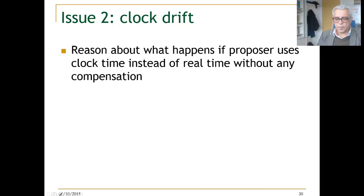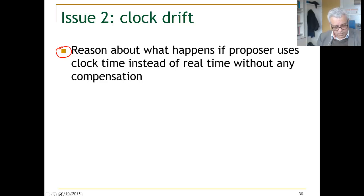Now we understand a little bit about what is physical time and what is a clock. Let's try to reason in our algorithm what happens when the clock of the proposer drifts. We will reason about what happens if a proposer uses clock time instead of real time without any compensation. Here is one case: during the lease period, the clock runs faster than real time of the proposer. In fact, in this case, safety cannot be violated because the proposer will believe that its lease expires sooner than it actually did.